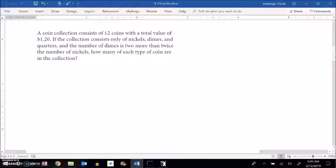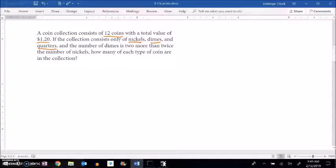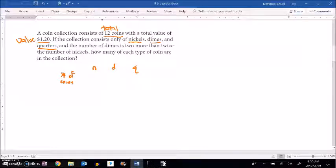Alright, next problem. Another coin problem. In this case a coin collection consists of 12 coins with a total value of $1.20 and the collection consists only of nickels, dimes, and quarters. So I know I got nickels, dimes, and quarters. I'm counting, I know two things: I know something about the total number of coins and I know something about the value of the coins. So I'm just going to let n stand for the number of nickels, d stand for the number of dimes, q stand for the number of quarters. And I know that there's 12 of them, so there's one of my equations right there.